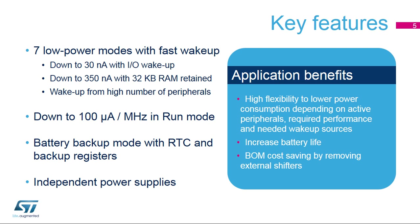The STM32L4 has several key features related to power management. Several low-power modes down to 30 nanoamps, while it is still possible to wake up the MCU with an event on an I/O. For only 350 nanoamps, 32 kilobytes of SRAM can be retained. A large number of peripherals can wake up from the various low-power modes. Dynamic consumption is down to 100 microamps per MHz executing from flash memory. A battery backup domain called VBAT includes the RTC and certain backup registers. Several power supplies are independent, allowing you to reduce MCU power consumption while some peripherals are supplied at higher voltages. Thanks to the large number of power modes, STM32L4 devices offer high flexibility to minimize power consumption and adjust it depending on active peripherals, required performance, and needed wake-up sources.